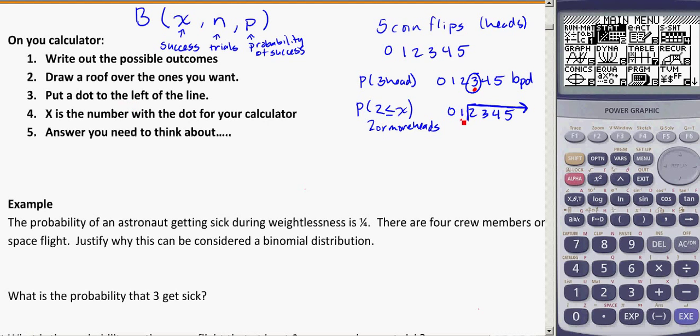This little bracket here is saying I want to know the probability of getting two, three, four, or five. I'm going to put my dot on the left of the line, and that's what I'm going to put into my calculator. So here, into my calculator, I would do B, and in this case, C,